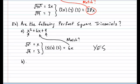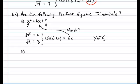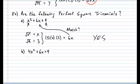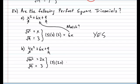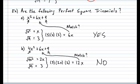Question B: is 4x² + 6x + 9 a perfect square trinomial? The first term is a perfect square; the third term is a perfect square. Square root the first term: 2x. Square root the third term: 3. Multiply together and times 2: that gives 12x. Is that a match for our middle term? No, it's not. So this is not a perfect square trinomial.